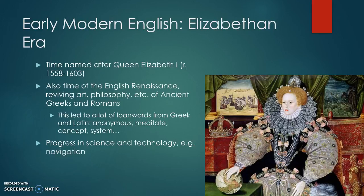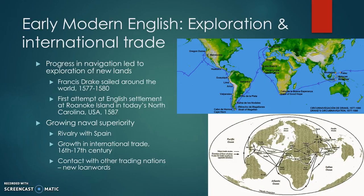The British started to trade internationally thanks to this progress in navigation. For example, Francis Drake sailed around the world — we can see his route on the map at the top — which took him from 1577 to 1580. It was also the time when English people first tried to settle in newly explored lands, with a settlement in today's North Carolina on Roanoke Island in 1587, which ended in disaster — the entire settlement was wiped out and everyone was killed, and to this day people don't really know why.